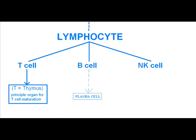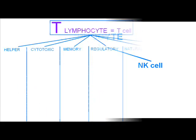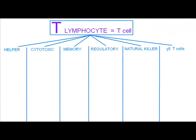The letter T originates from the word thymus, so it's equal to thymus. It's the principal organ for T cell maturation. I've classified for you all the types of T lymphocytes, of T cells.